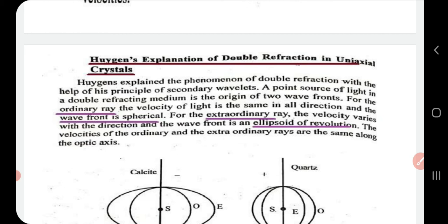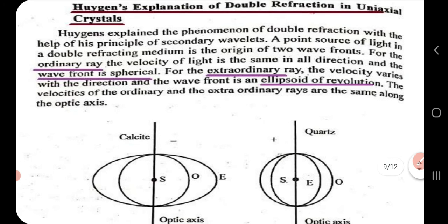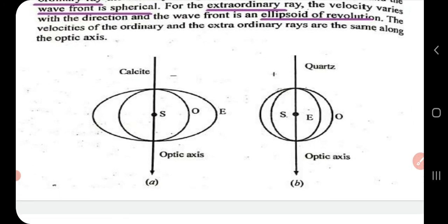Huygens explained double refraction in uniaxial crystals using the principle of secondary wavelets. He said a point source of light in a double-refracting medium gives rise to two wave fronts. For the ordinary ray, velocity is the same in all directions, so its wave front is spherical. For the extraordinary ray, velocity varies with direction of propagation, so its wave front is an ellipsoid of revolution. The velocities of the ordinary and extraordinary rays are equal along the optic axis, and this holds for both calcite and quartz crystals.